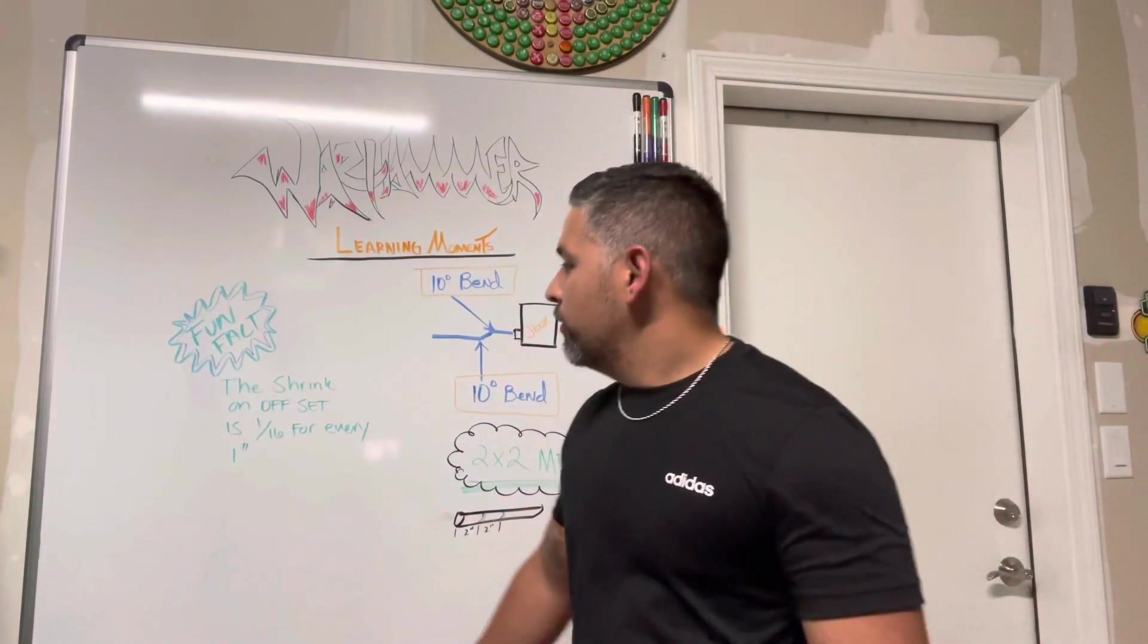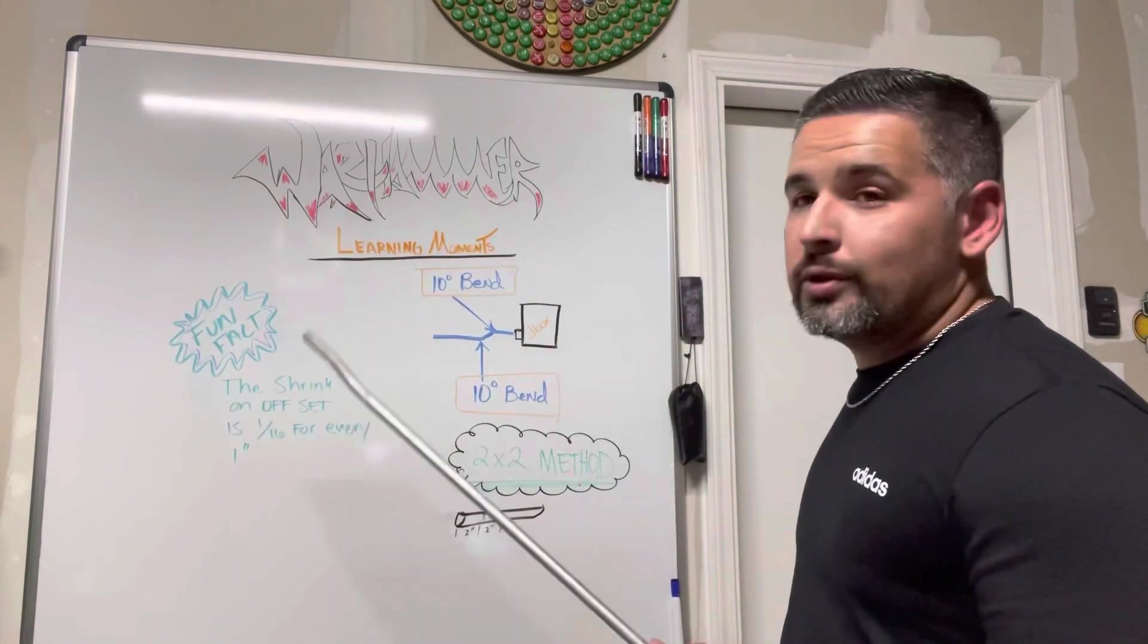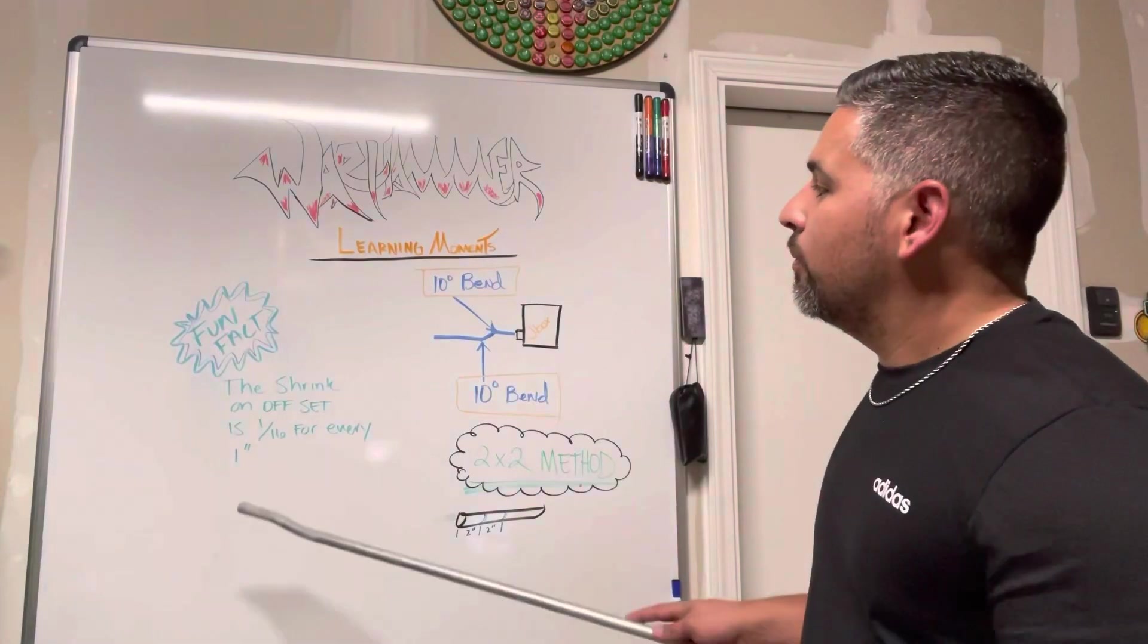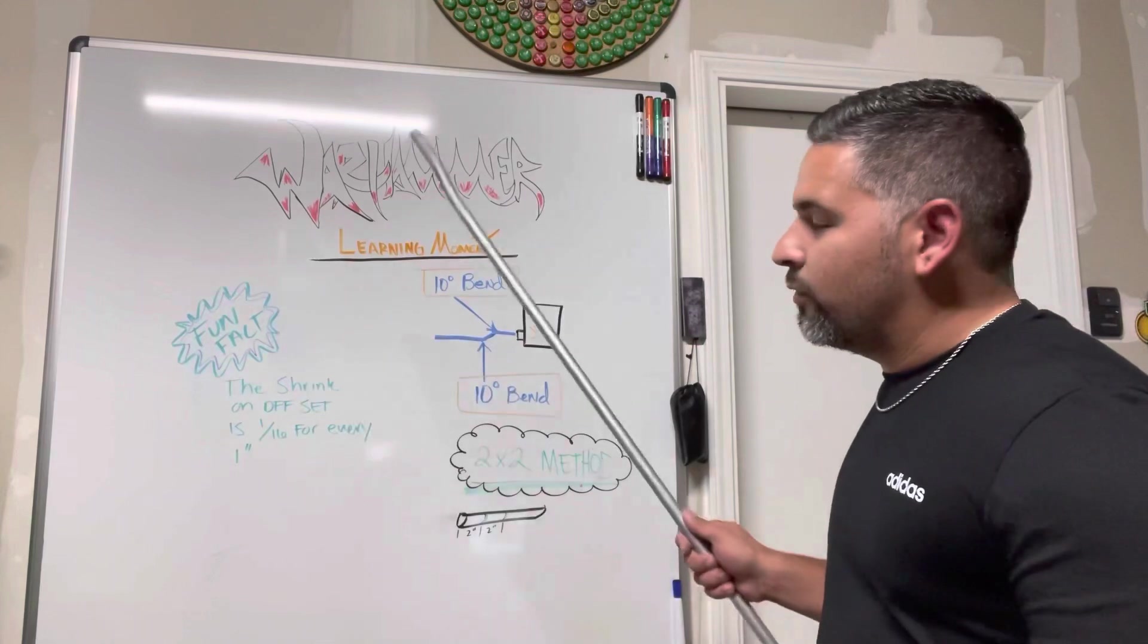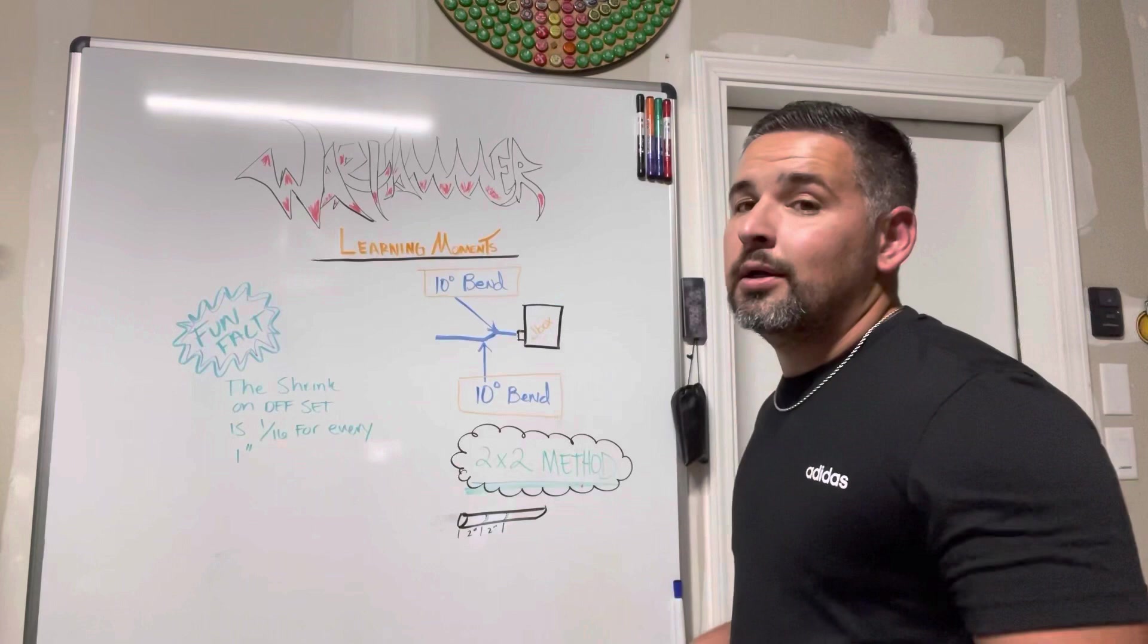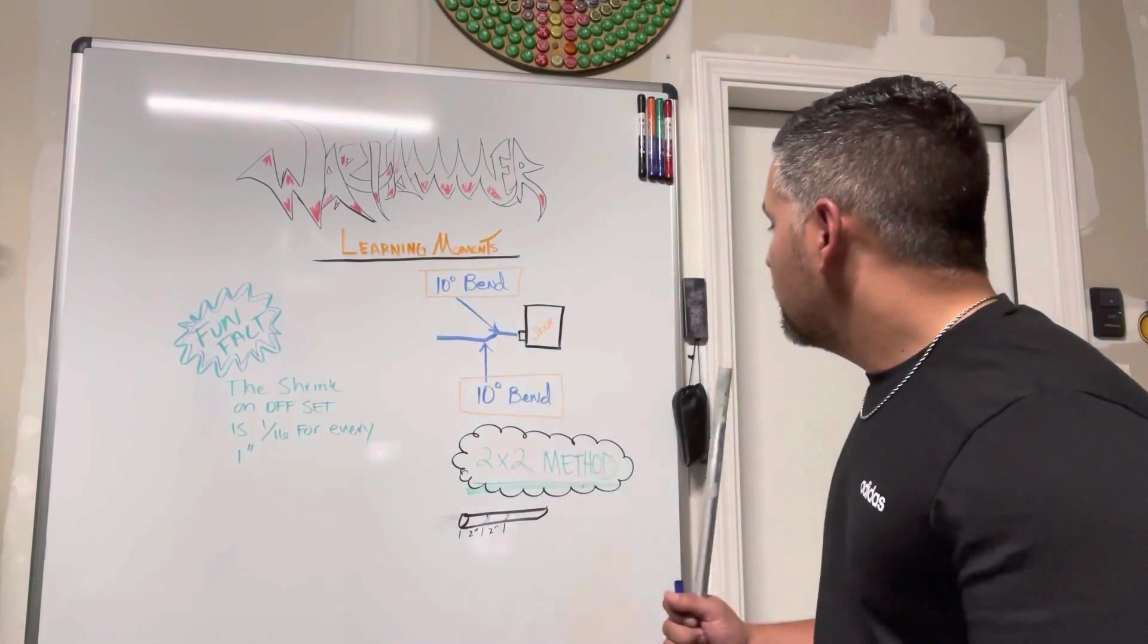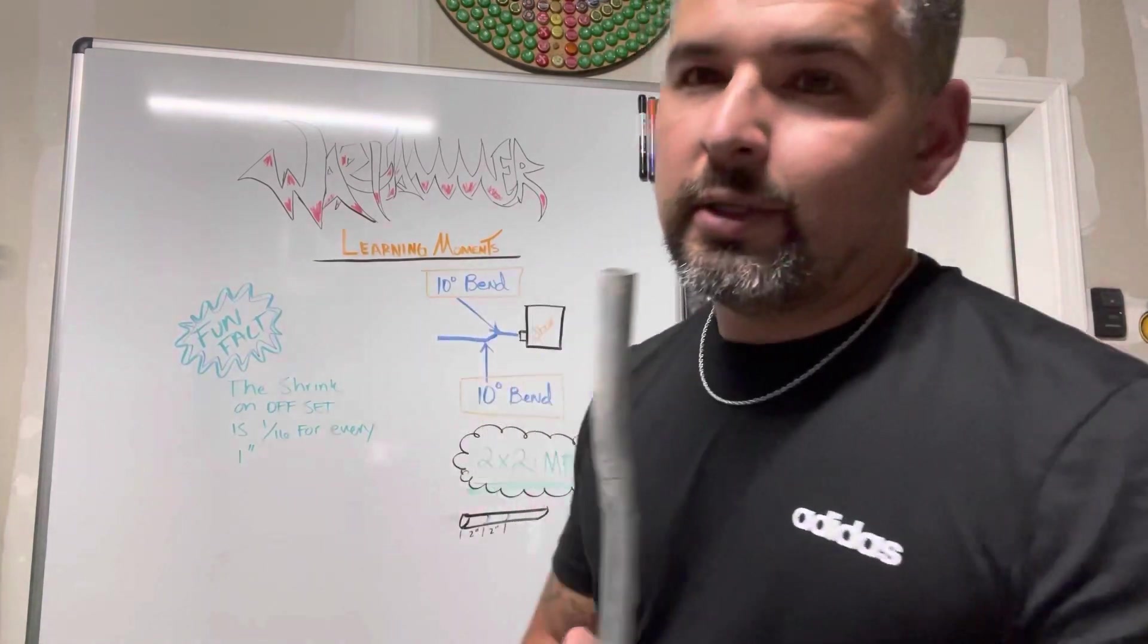Oh, and always my fun fact. It doesn't really pertain to this particular box offset since there's not that much shrinkage involved, but the shrink on an offset is going to be one sixteenth for every inch on your object. So if you got a two-inch object, well that's going to be two sixteenths. There you go, easy peasy. I hope you guys enjoyed the two by two method. Till next time!